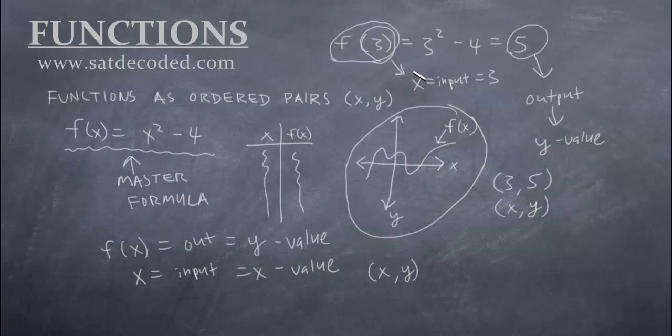So you can stick in any number you want right here for the input and you'll be able to solve it and get some sort of output. If you do it enough times you'll start getting a bunch of ordered pairs. You'll get (3,5). You do another one like f(2), f(1), f(0). You find out enough and you'll get a bunch of ordered pairs. And when you have all the ordered pairs you can plot them on the graph.